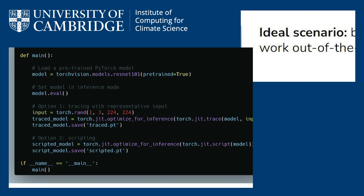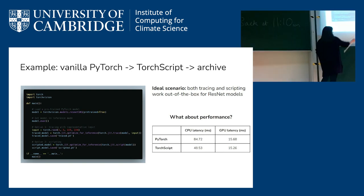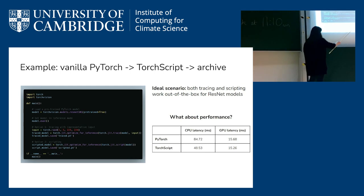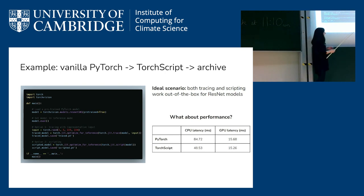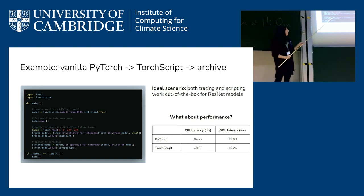I have some benchmarks comparing the vanilla PyTorch model on CPU and GPU versus the optimized TorchScript model on CPU and GPU. On the CPU at least, there's almost a 2x difference in performance from using this JIT approach in PyTorch. So regardless of the coupling, this is something you should do in general when deploying PyTorch models.